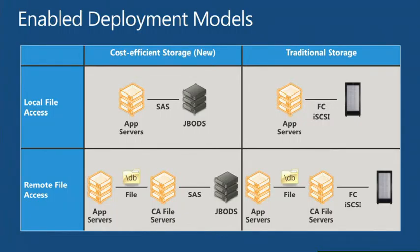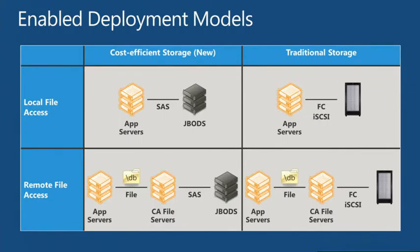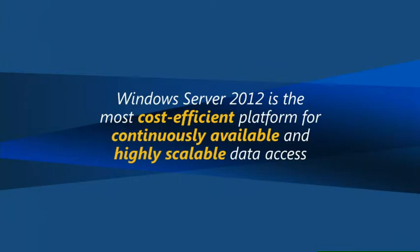We've made enhancements to improve that traditional approach in Server 2012. We've also introduced a new category: cost-efficient deployments where you take JBODs — just a bunch of disks — and directly connect them to Windows through a SAS connection. You can use local file access or remote file share access. The end goal is to make Server 2012 the most cost-efficient platform for continuous availability and high scalability.